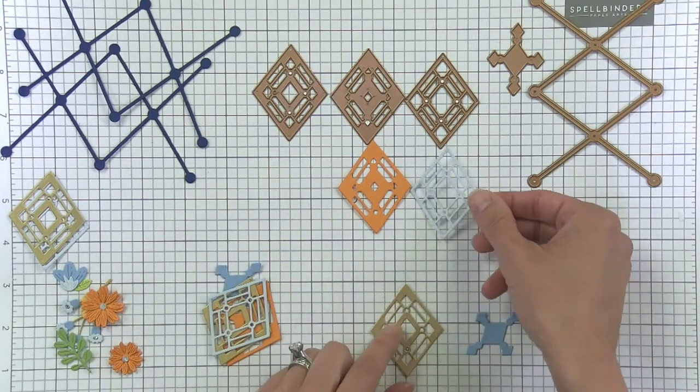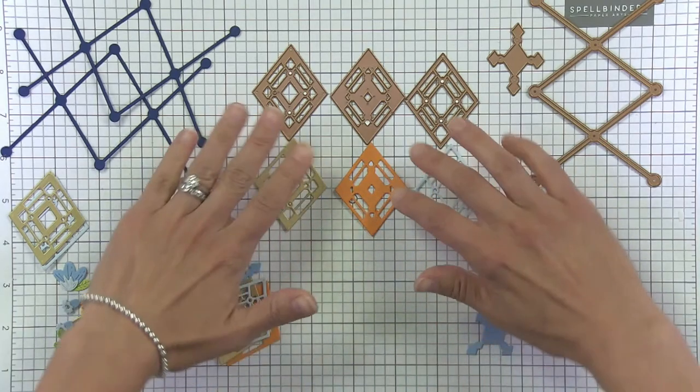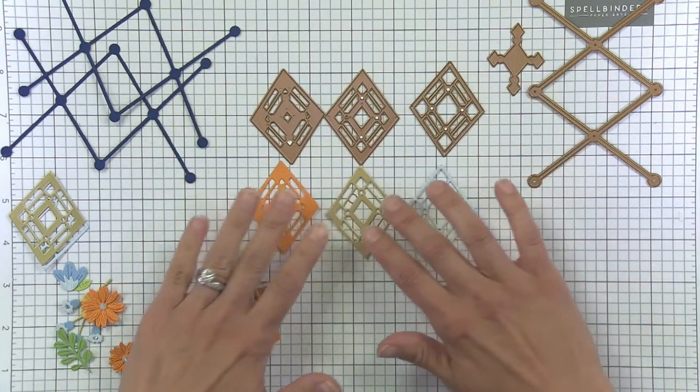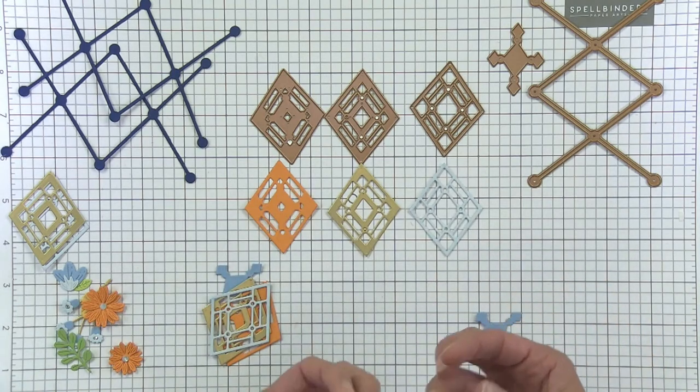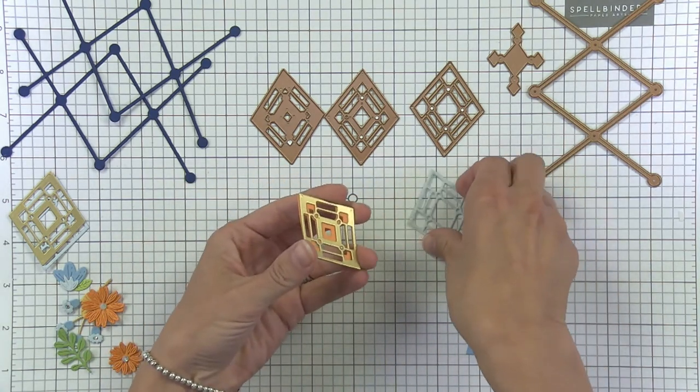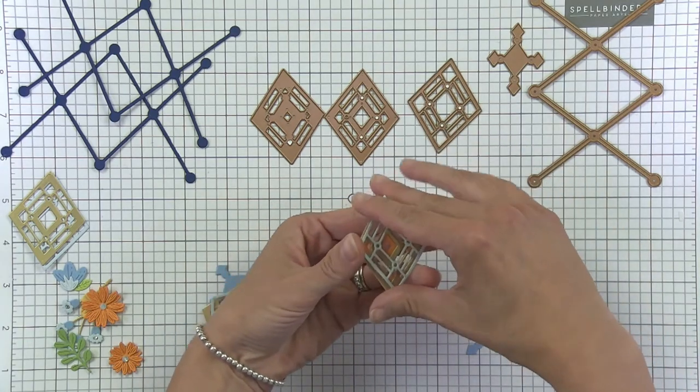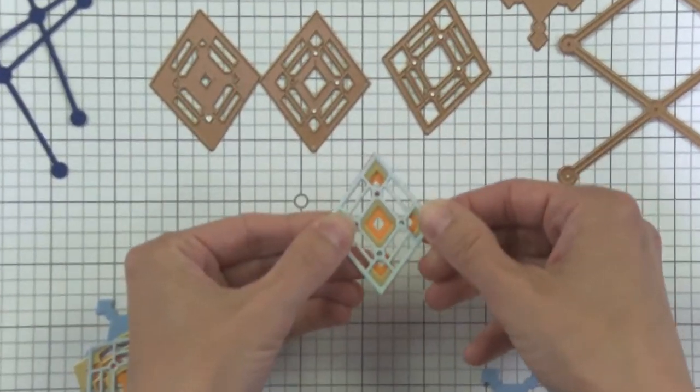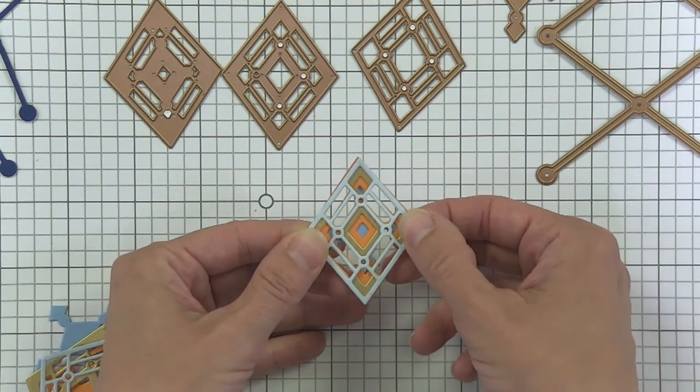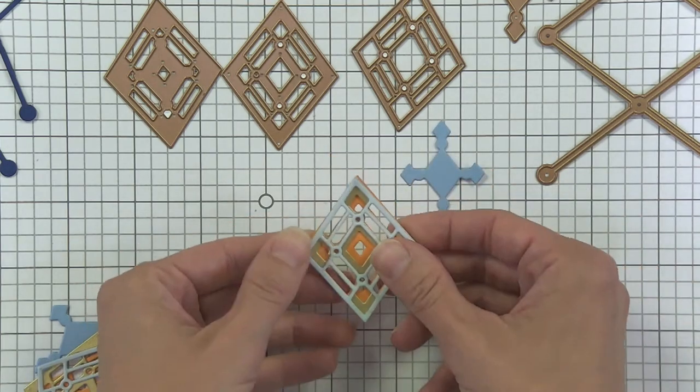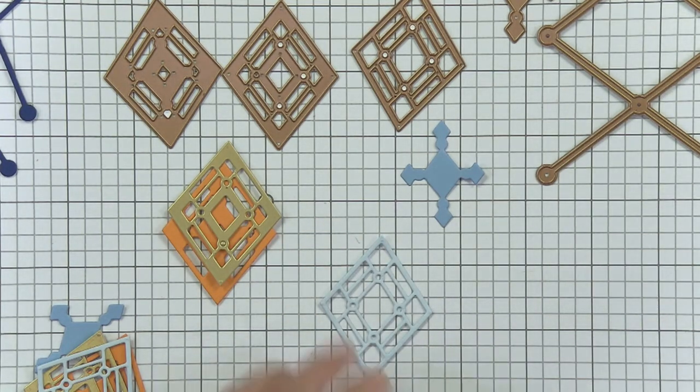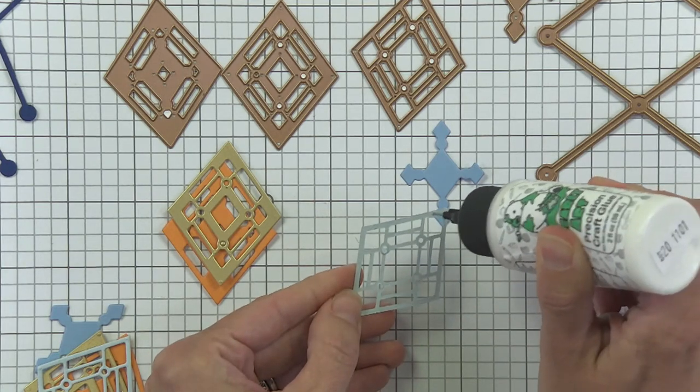Just like with all of our Kaleidoscope dies, it has three layers. Actually, this one has a fourth. It's a bonus. And so what you will want to do is die cut them in different colors, tones, or you could even do it all one color. I did some samples with that. We have opted for this light blue, the orange, and the gold in the middle. We tend to like to put the metallic one in the middle just to give a little of that peeking through. I'm going to go ahead and just glue them.